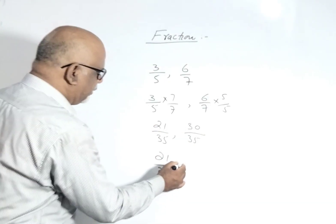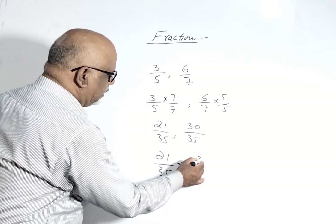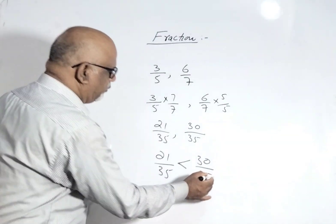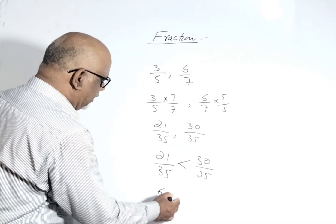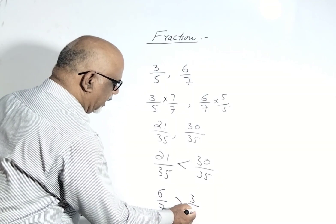So 21 upon 35 is less than 30 upon 35. That means 6 upon 7 is greater than 3 upon 5.